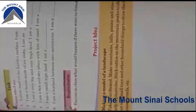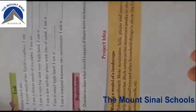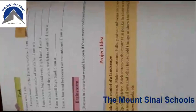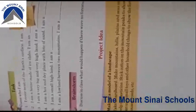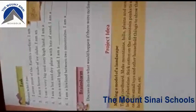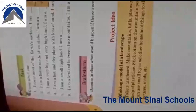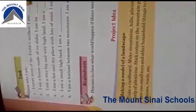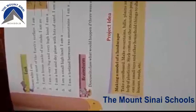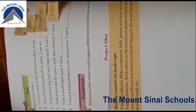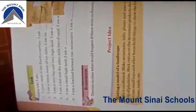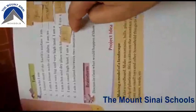In the 'Who am I?' game: I cover most of the earth's surface — I am water. I am a house made of ice — I am an igloo. I am very big and very high land — I am a mountain. I am a hot and dry place with lots of sand — I am a desert. I am a small highland — I am a hill. I am a lowland between two mountains — I am a valley.